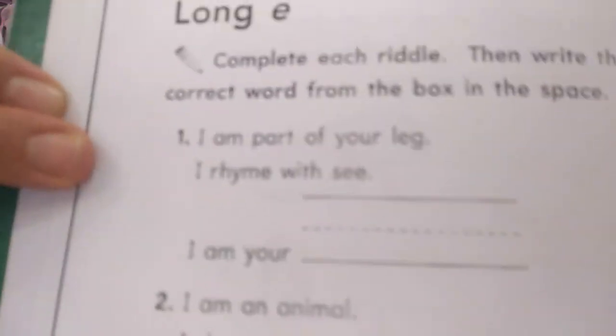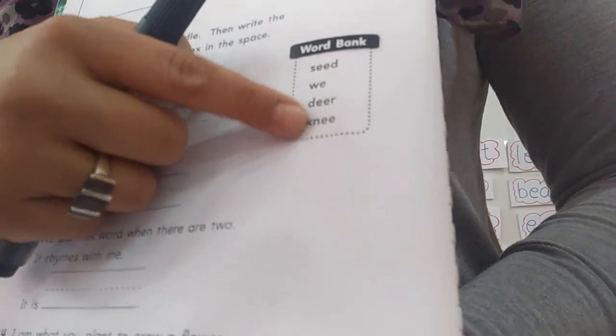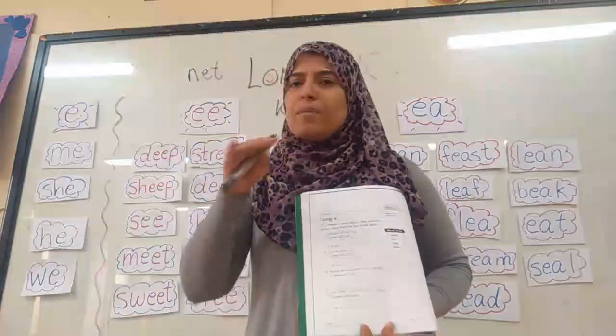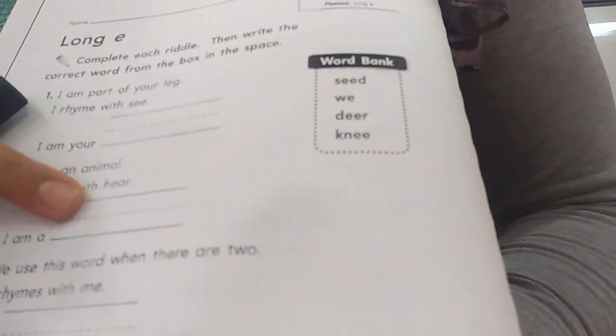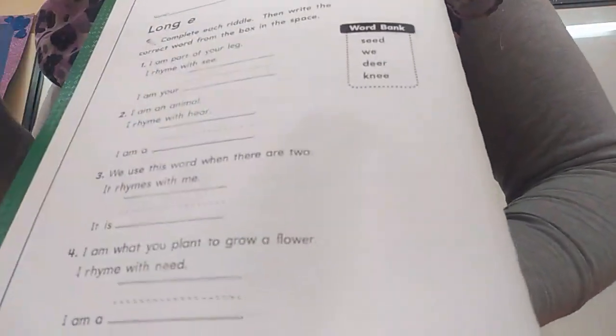Number one: I am part of your leg. I rhyme with C. Which one is a part of my leg — seed, we, deer, or knee? Of course, knee. And knee rhymes with C — knee, sea. Rhyme means it has the same sound. Number two: I am an animal. I rhyme with 'hear'. Which one is an animal? Seed, we, deer — deer! Deer and hear rhyme together, and deer is an animal.